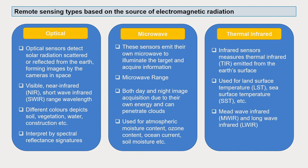Remote sensing types are based on the source of electromagnetic radiation. There are three different types: optical, microwave, and thermal infrared. These three electromagnetic radiations mainly differentiate the nature and types of remote sensing.